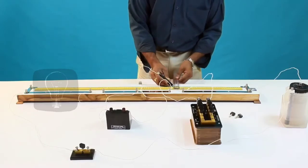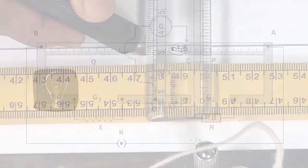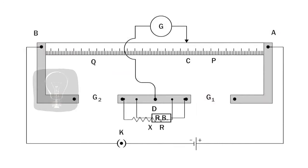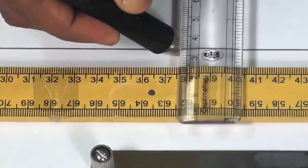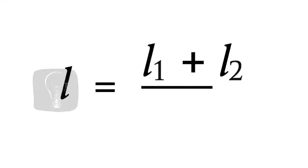Measure the distance L1 from the terminal A to the balancing point. Now interchange the position of the resistance wire and resistance box in gaps G1 and G2. Measure the distance L2 from the terminal B to the balancing point. Then calculate the mean balancing length L.